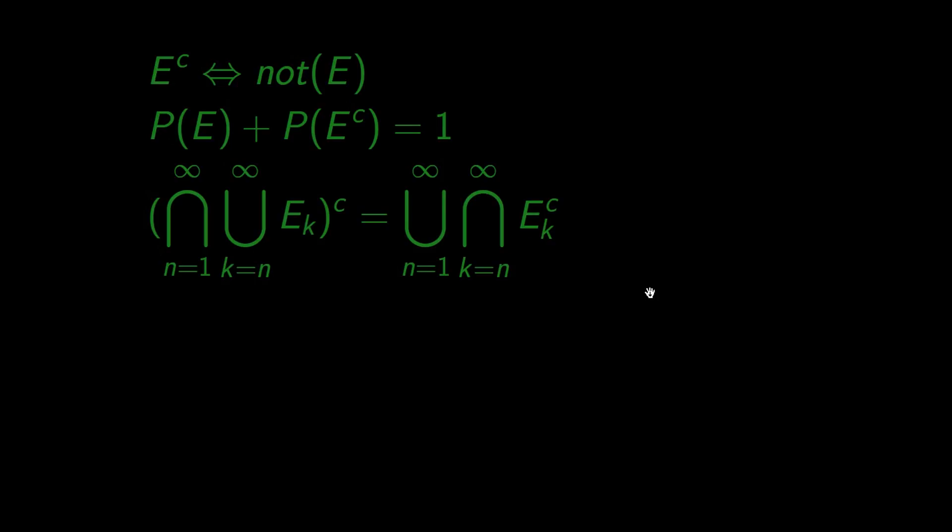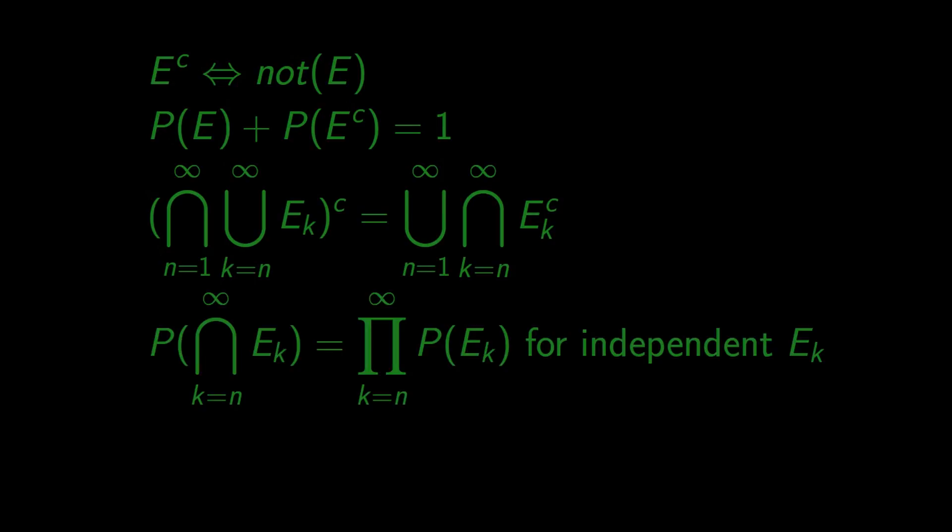We also used the fact that for independent events, the probability of the product is the same as the product of probabilities. You see, even the signs are similar here. And finally, we used the inequality that we mentioned in the beginning.